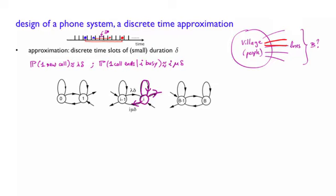As we ignore the fact that more than one new call can happen, or more than one call can be terminated during a given slot. So what is the probability of an upward transition? That's the probability that the Poisson process has an arrival during the slots of duration delta. And as we have seen, this is lambda times delta. So each one of this upward transition has the same probability of lambda times delta.